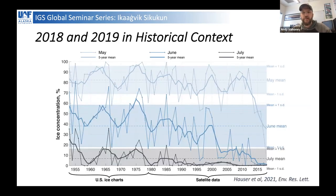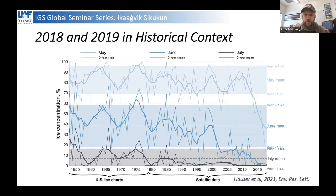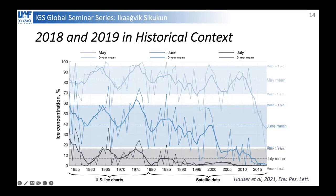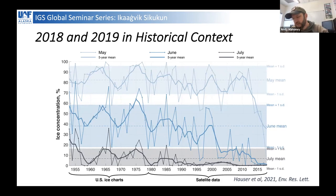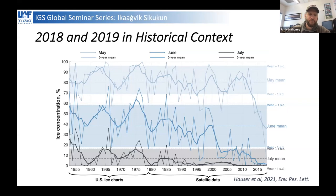To provide historical context about 2018 and 2019, these are mean monthly sea ice concentrations within Kotzebue Sound for May, June, and July. Toward the end of this period ending in 2018, May is starting to look like what June used to look like, and June is starting to look like what July used to look like. July is starting to look like it's never looked before. Our field work ended up taking place in these two highly anomalous years, and we constantly asked: how can you learn about stuff that has no precedent?